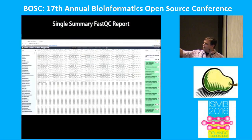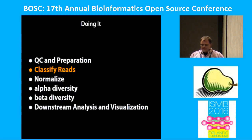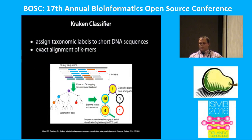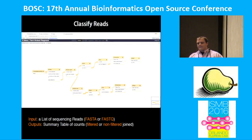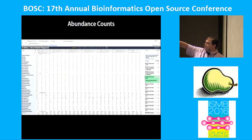In that report, across the top we have our sample names, along the left-hand side we have our tests, and then whether or not they pass or fail. To assign reads inside of Galaxy, one way you can do this is using Kraken. We then have our abundance counts shown across for our samples.